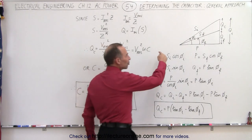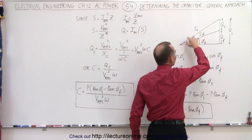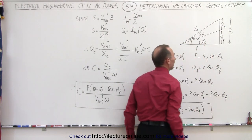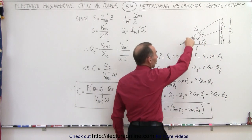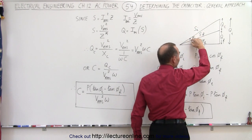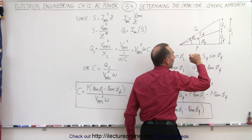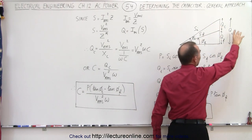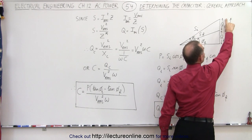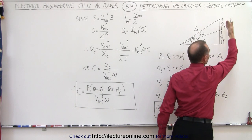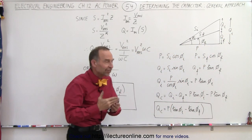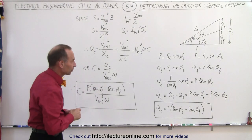When we use the power triangle, we have on the hypotenuse the complex power, the reactive power over here, and the real power down there. We start with a larger phase angle with the initial complex power that we want to reduce to a smaller phase angle with a final complex power. On the vertical axis we have the initial reactive power, then we add the capacitive power which reduces the final reactive power because the phase angle is opposite to the phase angle of the inductor.